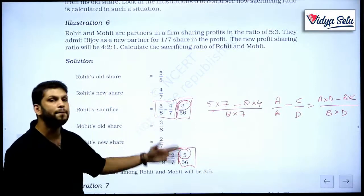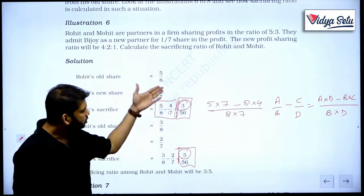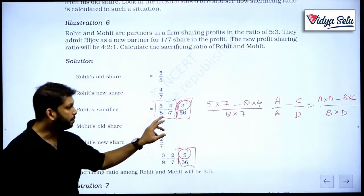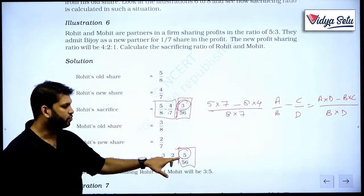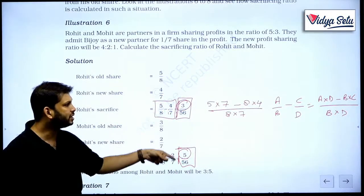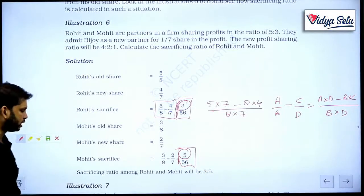He is sacrificing 3 upon 56, he is sacrificing 5 upon 56. So the ratio of their sacrifice amongst themselves is what? 3 is to 5. So sacrificing ratio is, see, do remember the total 3 and 5 should not be 56. This is the fraction and this is amongst them, the sacrificing ratio is 3 to 5.